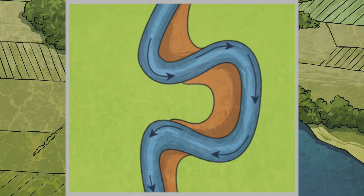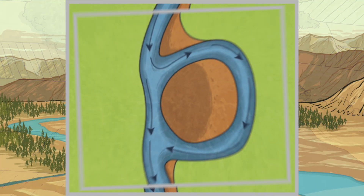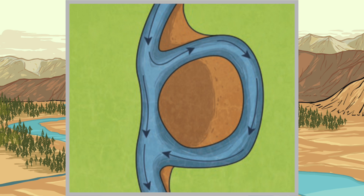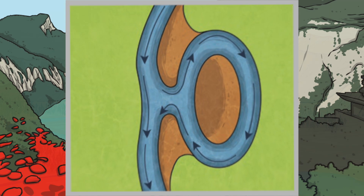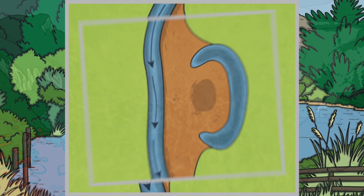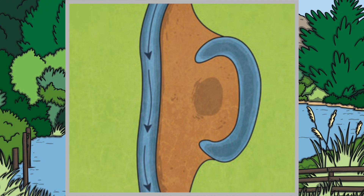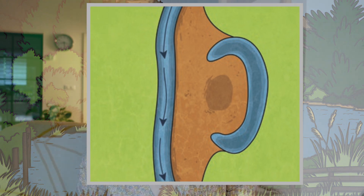Over time, this means the meander gets bigger. Eventually, the river cuts through the neck of the meander and starts a new, shorter course. The neck of the meander gets narrower over time, and lastly, the sediment continues to build up and eventually cuts the loop off from the course of the river. This separated body of water is known as an oxbow lake.